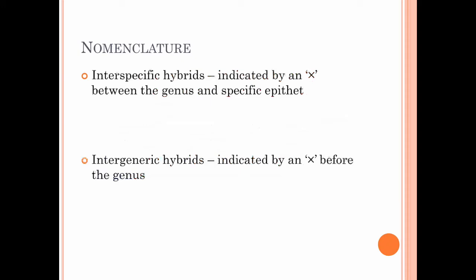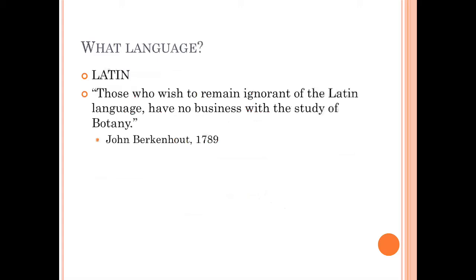If we have an interspecific hybrid, remember that's a cross between two different species within a genus. It's going to be indicated by this X between the genus and the specific epithet. So we might have something like Gaillardia X grandiflora. An intergeneric hybrid is indicated by an X before the genus. So we might have X Cupressocyparis leylandii, which is a cross between a Cupressus and a Cypress. Usually the name gives you some sort of indication of which two genera were used to make this cross. But again, the plants have to be pretty closely related. We don't really see that very often.